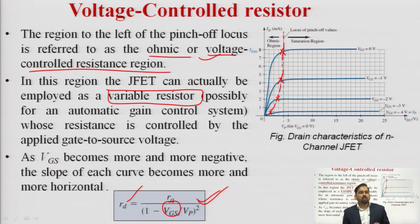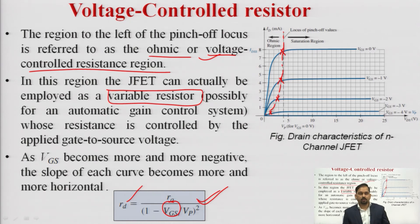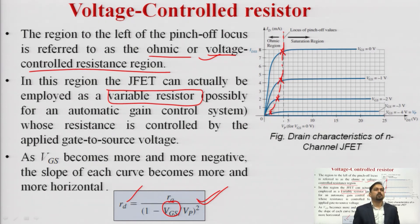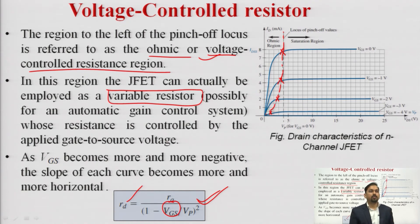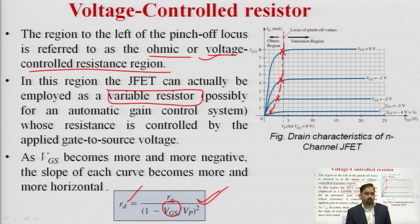Automatic gain control means the resistance is varying, so correspondingly the gain varies automatically — the gain is controlled by the resistance. As VGS becomes more and more negative, the slope of each curve becomes more shallow and eventually becomes horizontal.